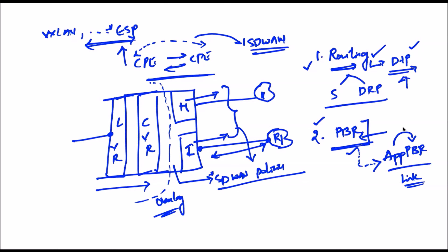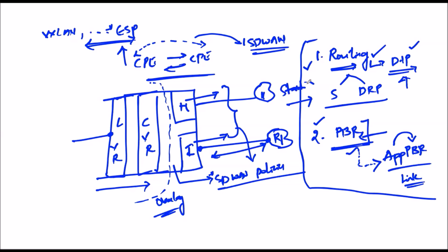In routing and PBR, we achieve next-hop information in a static method - we decide the physical next hop statically. Coming to the core competency of SD-WAN devices, which is SD-WAN policies, we select WAN transports or routing in a dynamic method. We select the underlay or WAN transports dynamically, not relying on the static method.